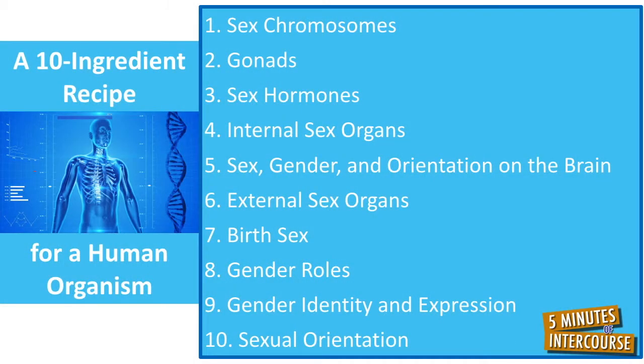To quickly review last week's intercourse, we put 10 ingredients together to build our human. In chronological order, these 10 ingredients were: sex chromosomes, gonads, sex hormones, internal sex organs, sex gender and orientation on the brain, external sex organs, birth sex, gender roles, gender identity and expression, and sexual orientation.